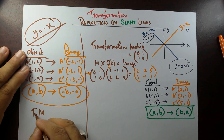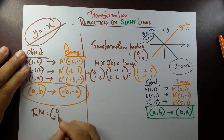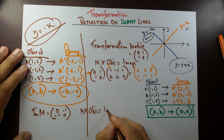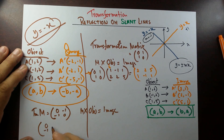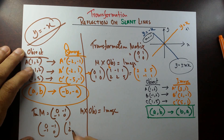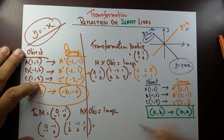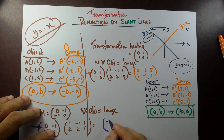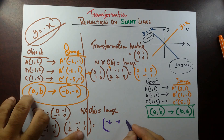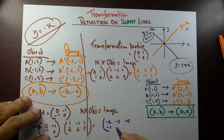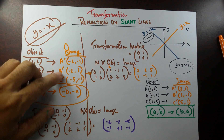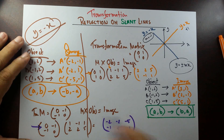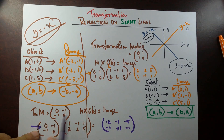What about the transformation matrix for y equal to minus x? The transformation matrix is [0, -1; -1, 0]. Let's verify: matrix times object equals image. Multiplying [0, -1; -1, 0] by the object columns (1,2), (-1,2), (1,5) gives: the first row produces -2, -2, -5, and the second row produces -1, +1, -1. So the image coordinates are (-2, -1), (-2, +1), and (-5, -1), which matches our expected result.